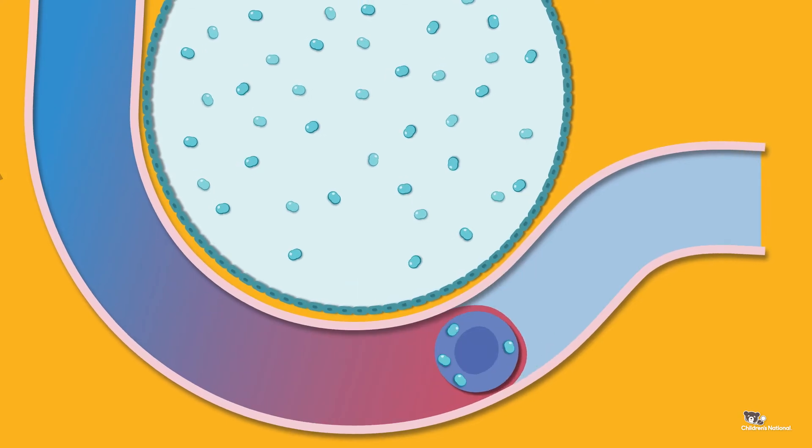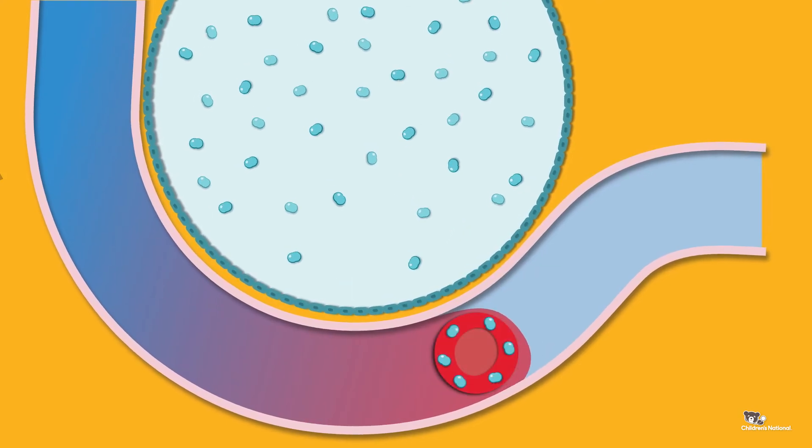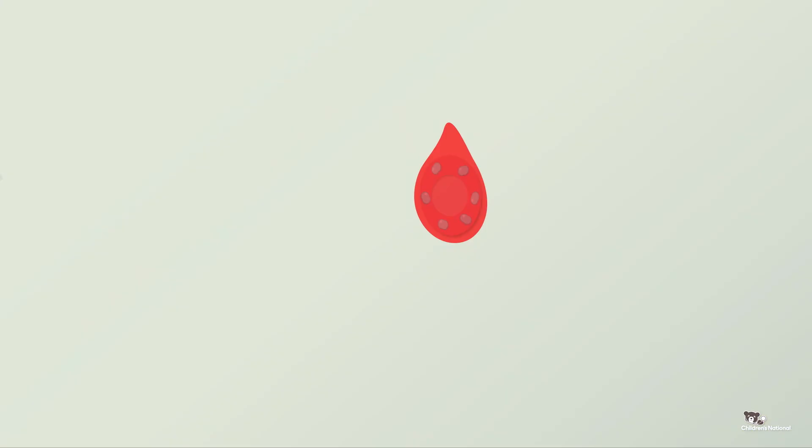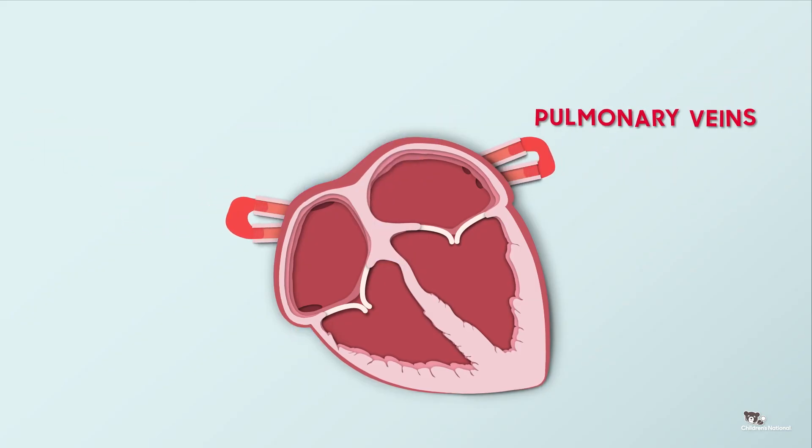When the blood picks up the oxygen, it turns into red blood, because now it has a lot of it. This red blood flows back to the heart from the lungs, through the pulmonary veins, and into the left atrium.